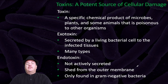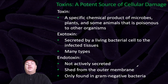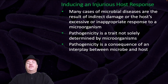Toxins are a potent source of cellular damage. A toxin is a specific chemical product of microbes, plants, and some animals that is poisonous to other organisms. Exotoxins are secreted by living bacterial cells to the infected tissues, and there are many types. Endotoxins are not actively secreted — they are shed from the outer membranes and are only found in gram-negative bacteria. Many cases of microbial disease are the result of indirect damage — the host's excessive or inappropriate response to a microorganism.